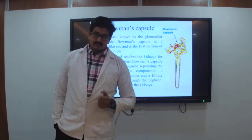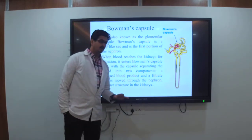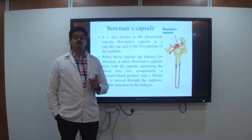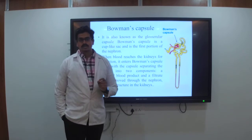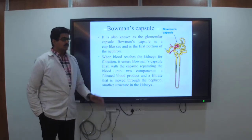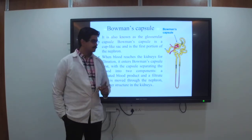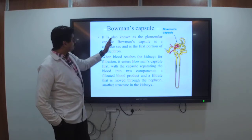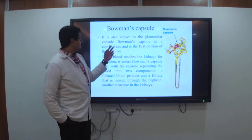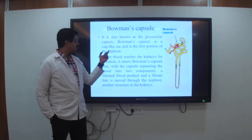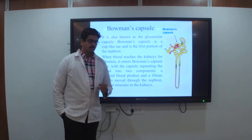Now we have seen the kidneys; let us look at the nephrons. There are 1.2 million functional units working together. The Bowman's capsule — also known as the glomerular capsule — is a cup-like blood sac and is the first portion of the nephron. When blood reaches the kidneys and filtration occurs, it enters the Bowman's capsule. The filtrate and blood products move through the nephron.